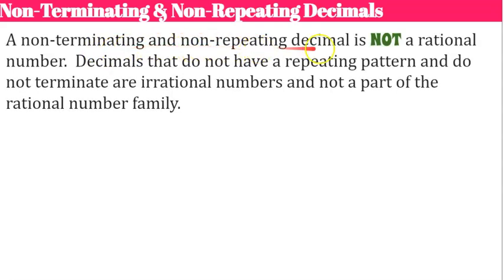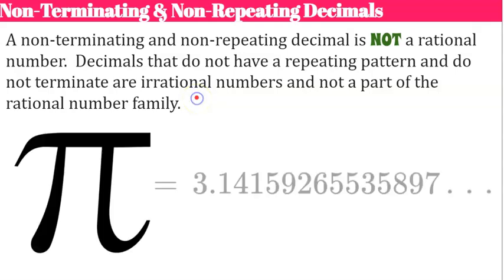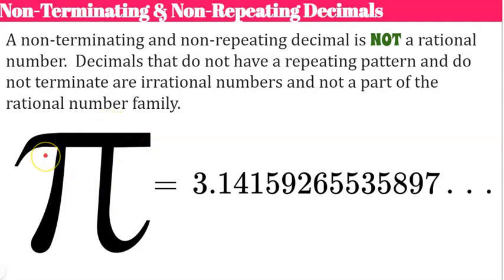A non-terminating and non-repeating decimal is not a rational number — it's what we call an irrational number. Decimals that do not have a repeating pattern and do not terminate are irrational numbers, not part of the rational number family. Keep in mind, irrational numbers are still real numbers. Pi is the most famous irrational number — it does not terminate and it does not have a repeating pattern.